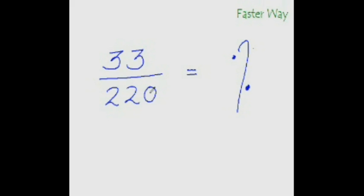Look at the denominator and ask: what percentage of it is the numerator? Ten percent of 220 is 22, but 33 is more than that, so our answer is more than ten percent. Twenty percent would be double of 22, which is 44 — that overshoots our target. So the answer is between ten and twenty percent. Let's try five percent: half of 22 is 11, and 22 plus 11 is 33. That's exactly our numerator, so ten percent plus five percent is fifteen percent — that is the exact answer.